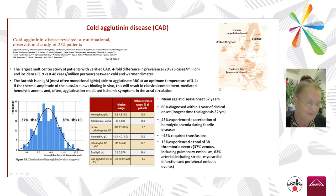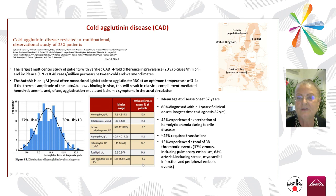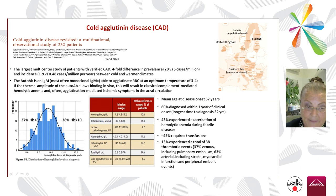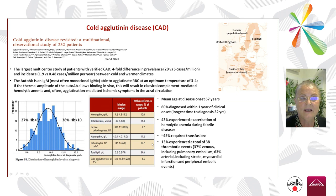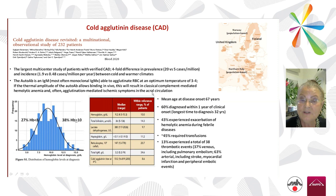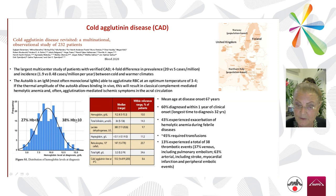Regarding cold agglutinin disease, we had the opportunity to review 232 patients in collaboration with my colleague Sigbjørn Berentsen from Norway — a very cold country — also involving other countries in Northern Europe. We found a fourfold difference in prevalence between cold and warm climates, which is clearly understandable. If the autoantibody, which is an IgM, has a thermal amplitude close to body temperature, this results in in vivo binding.